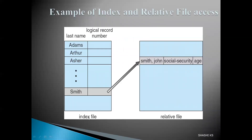In VMS operating system's index with relative access, there is an index file and the actual file residing in secondary memory containing the last name, first name, social security number, and age of employees. The index file contains the last names as pointers to the first record of each disk block. For example, the pointer where the first record's last name is 'Smith' points to the actual disk block location in secondary memory. The index file makes search operations quicker — instead of searching through the entire file, the index acts like a book index, pointing directly to the actual block containing the desired record.